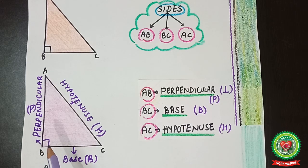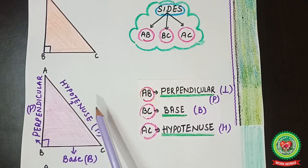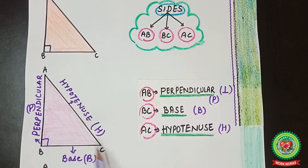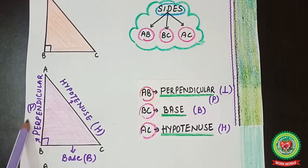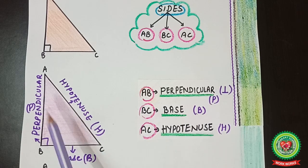You need to know which angle is the right angle because it helps you identify the important side of the right-angle triangle — that is the hypotenuse, which is the longest side. The hypotenuse is always the side opposite to the right angle. So AC is the hypotenuse, denoted by capital H. BC is the base, denoted by capital B. AB is the perpendicular, denoted by capital P.